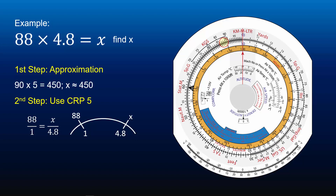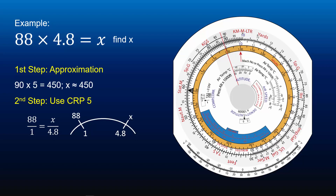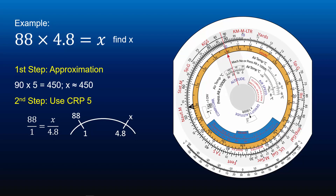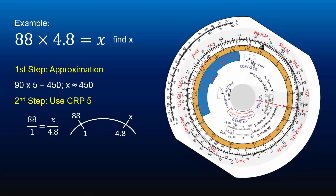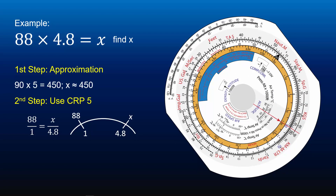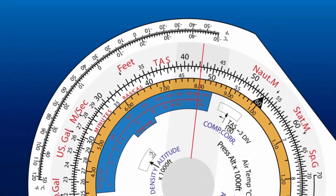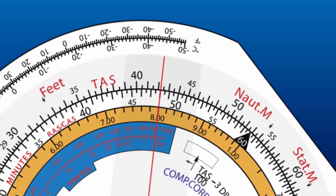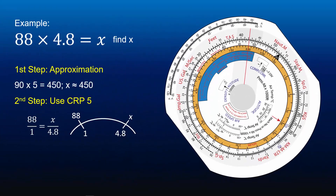Locate 88 on the outer scale and align the cursor with 88. Align the blue number 10 index on the inner scale with 88. Then locate 4.8 on the inner scale and turn the CRP5 so that 4.8 is on top, then align the cursor to 4.8 on the inner scale. Read off the answer on the outer scale opposite to 4.8 — it is 42.2. From the CRP5 operation we know X is equal to 42.2. To confirm the answer, we check back with the approximate value of 450. Since 42.2 is well below 450, the answer should be 422, not 42.2. Therefore, X is equal to 422.